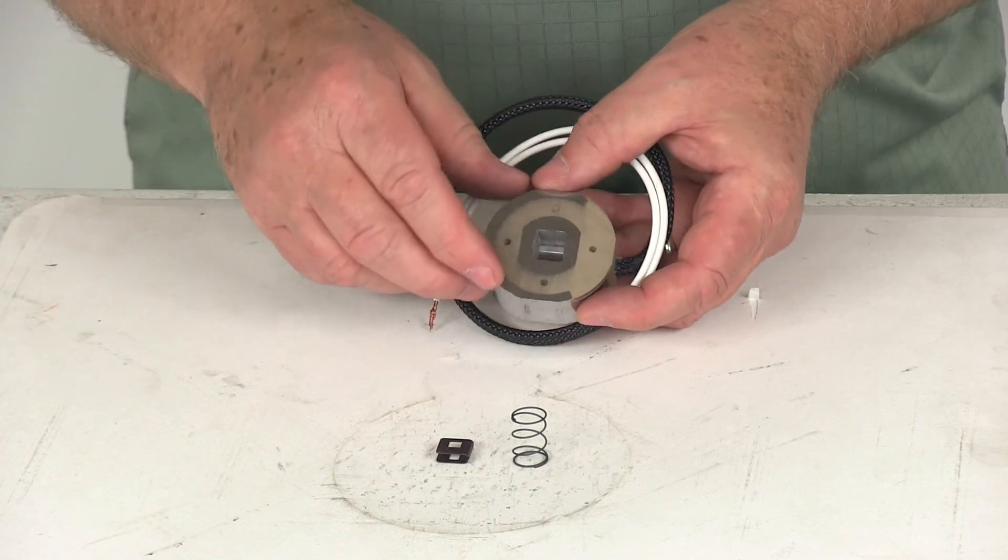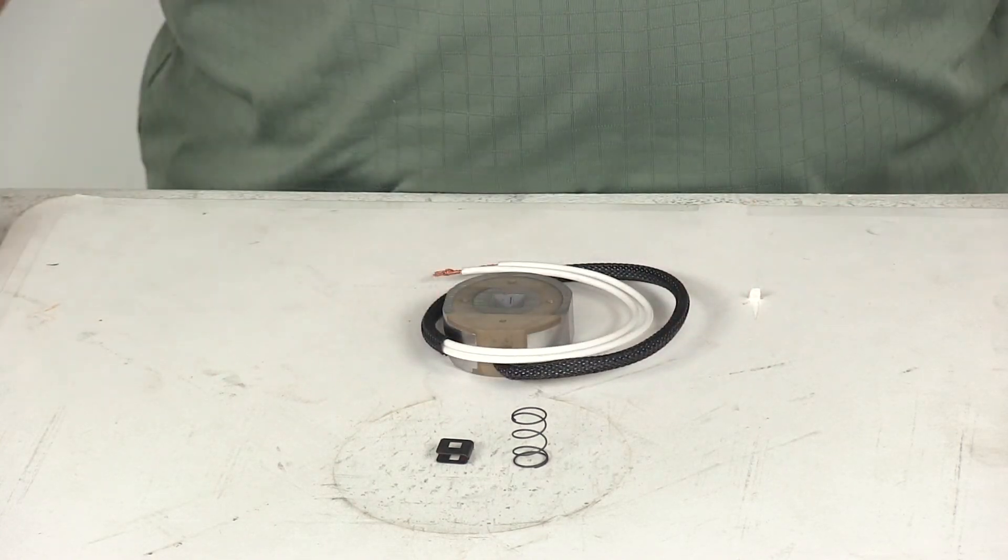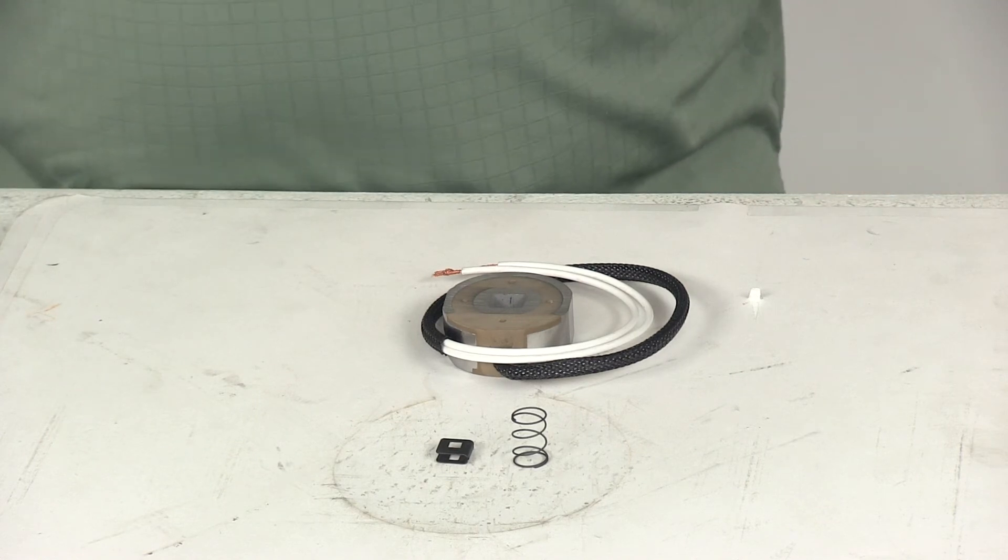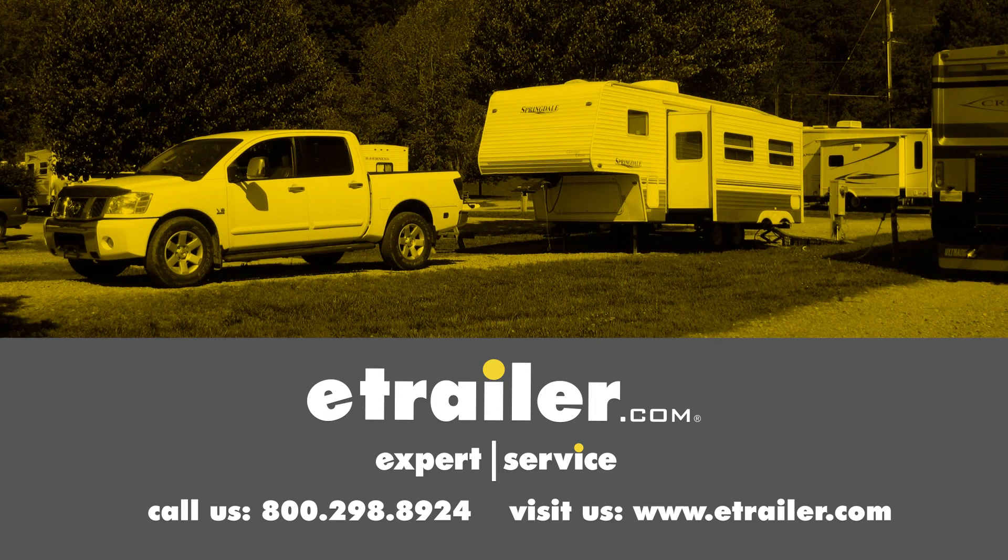That should do it for the review of the replacement trailer brake magnet kit for the Dexter 7-inch and 10-inch trailer brake assemblies. Click the link below to shop, learn more, or visit us at eTrailer.com.